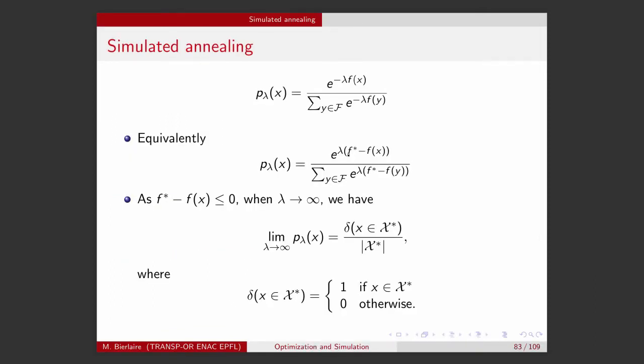I will introduce the value of f-star everywhere so that the numerator and denominator are equivalent. The quantity we find in both is negative — at least non-positive — because f-star is the best, i.e., the lowest possible value within the feasible set. This means that when the parameter lambda goes to infinity, the probability mass function will basically concentrate on the optimal solution. If x is an optimal solution, the difference is zero and lambda plays no role. But if x is not optimal, f-star minus f(x) is a negative number, and because lambda goes to plus infinity, the probability will go to zero.